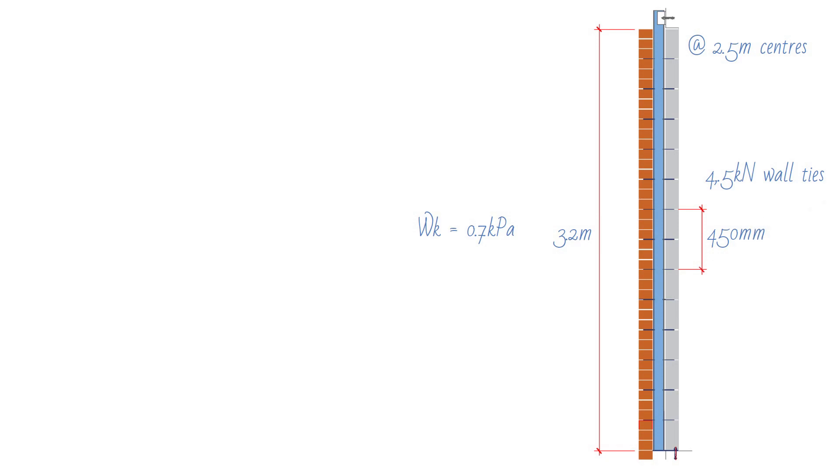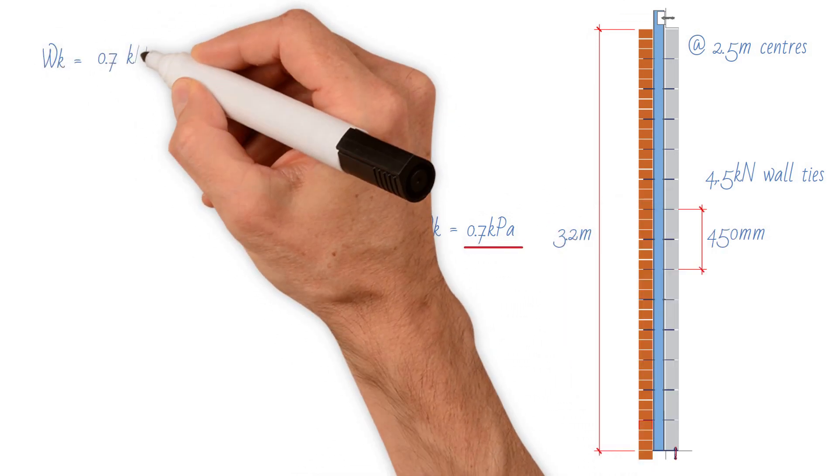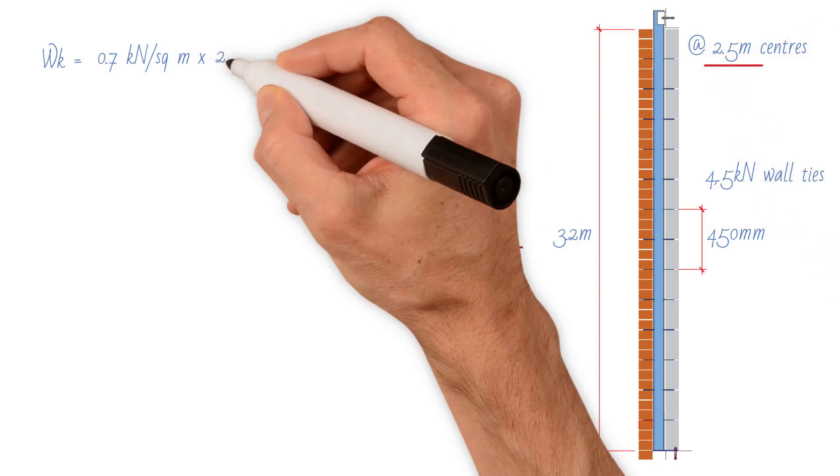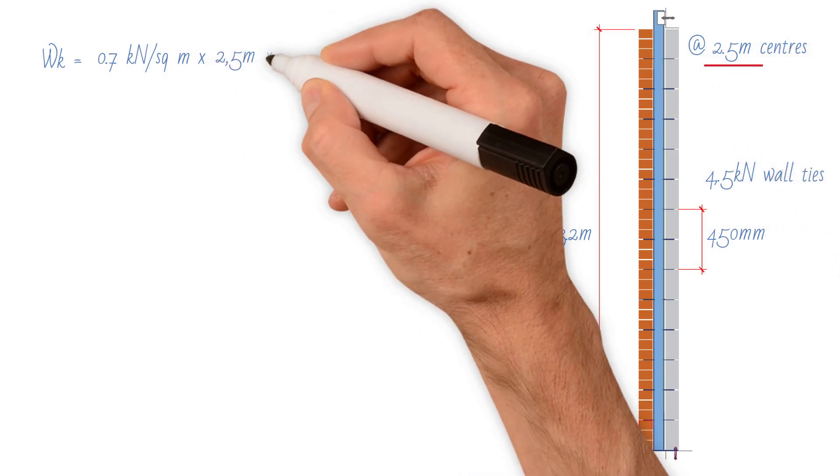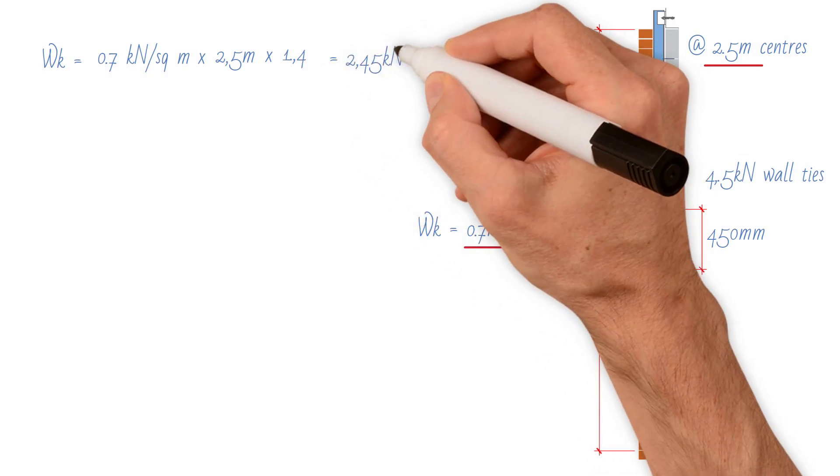First, we need to work out the load applied on the windpost, which is 0.7 kilonewtons per square meter times 2.5 meters times partial safety factor 1.4. This results in a value of 2.45 kilonewtons per meter.